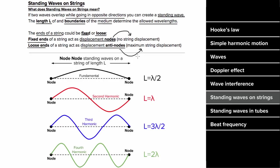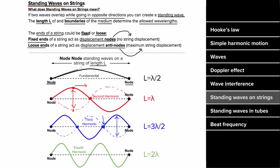Standing waves no longer appear to move along the medium — they oscillate back and forth in place. An antinode moves from top to bottom and back, but the crest doesn't travel right or left, hence the name 'standing wave.' Nodes stay put with no displacement. The only allowed standing waves must start at a node and end at a node. The fundamental standing wave is the largest possible wavelength, which is one half of a wavelength, so the length of the medium equals one half of the wavelength.